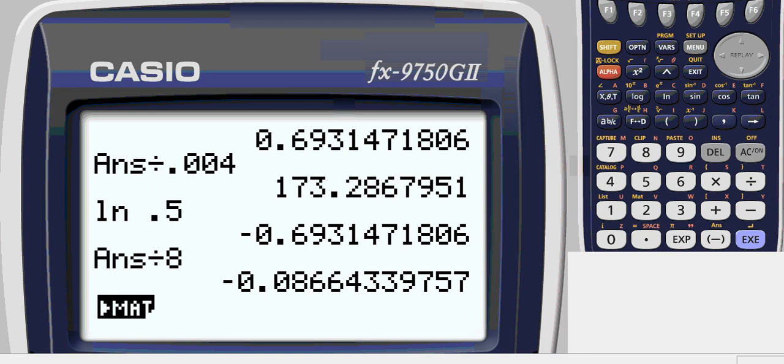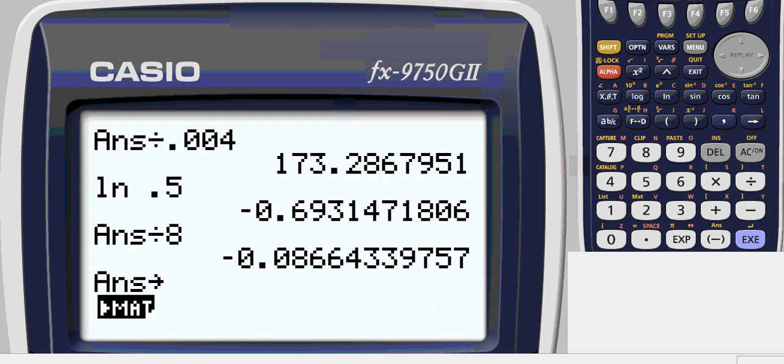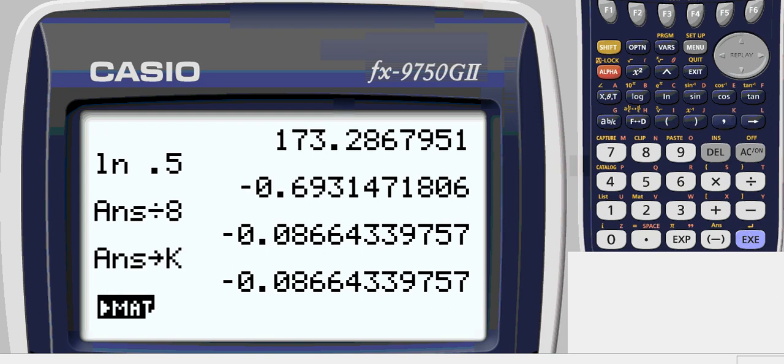So, again, that's a pretty long decimal, so I'm going to choose to store it. We'll store it for k again. So we can use it later. On our paper, we write down about what it would be, so we'll round it a little bit. Negative point zero eight six six.